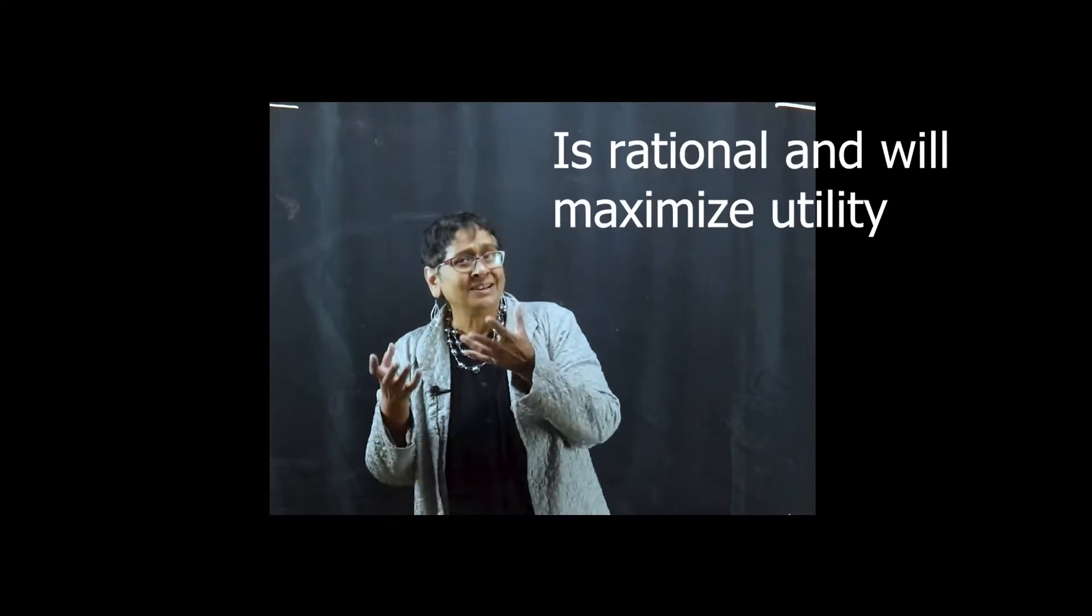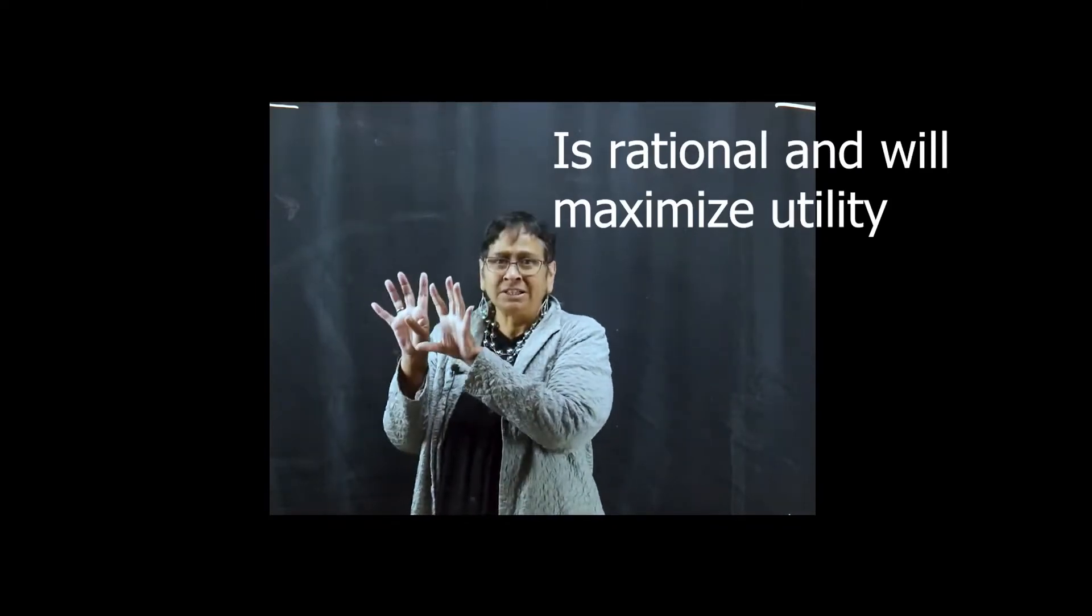When you consider Homo economicus, we know Homo economicus is rational and is going to maximize their utility. But we also know that if you want things and your resources are unlimited, maximization just means buying more and more of everything.